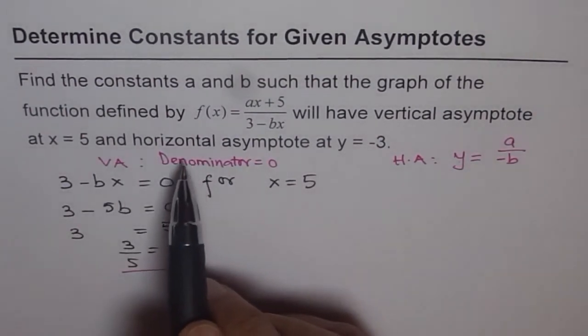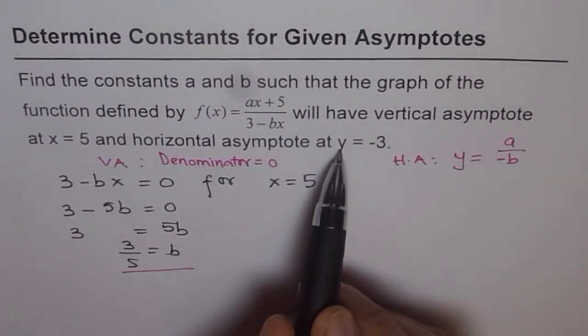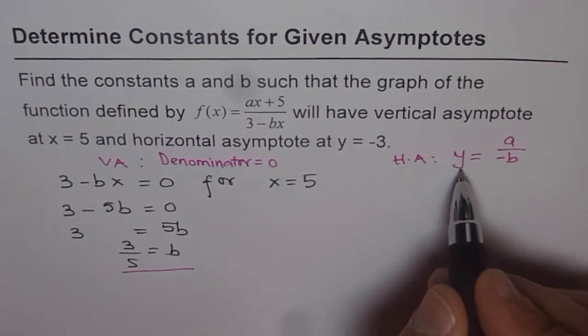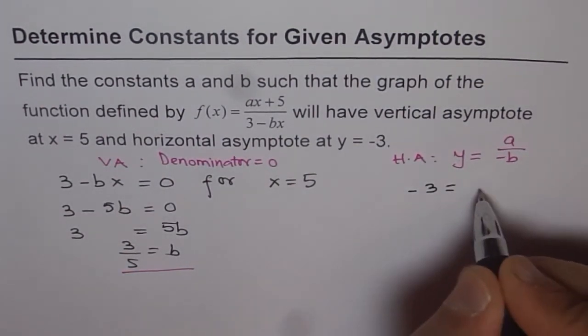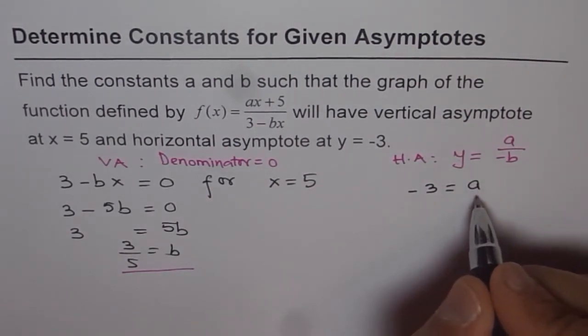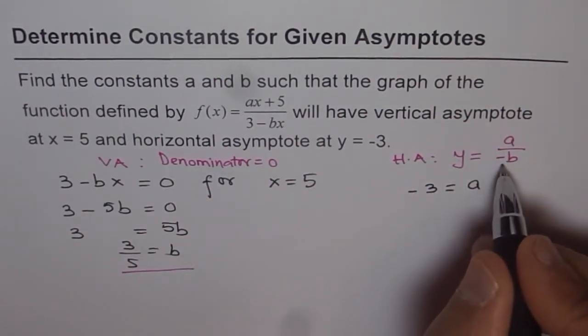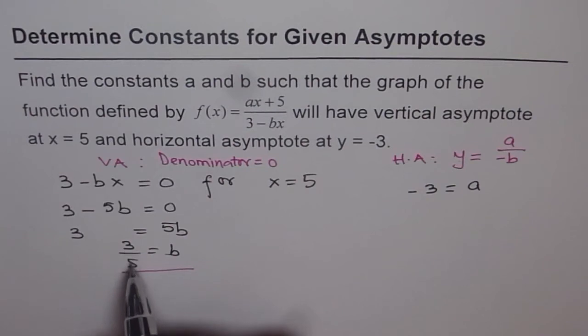So from this condition, when we say horizontal asymptote at y equals minus 3, we will substitute y as minus 3. See what happens. So minus 3 equals a over b, minus of b. So b is 3 over 5. So what is minus of b? You can write this as minus 3 over 5.